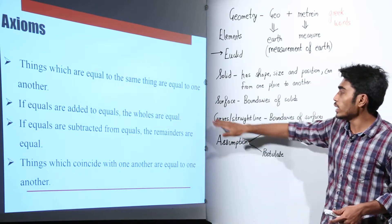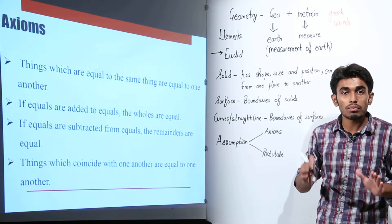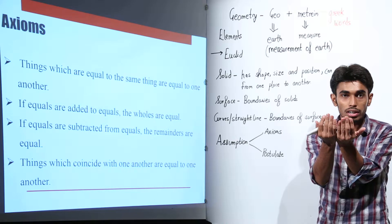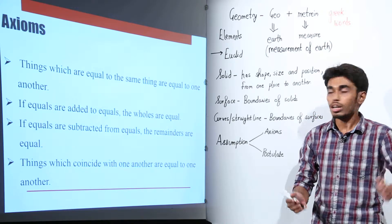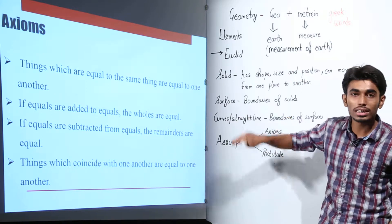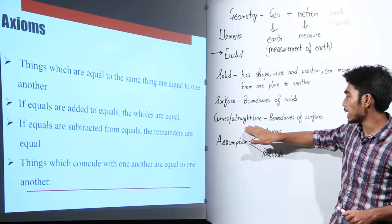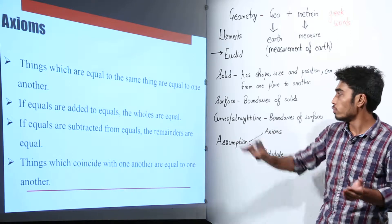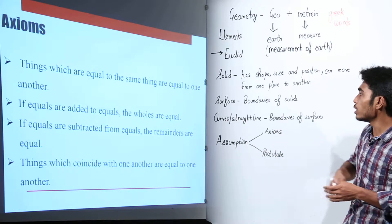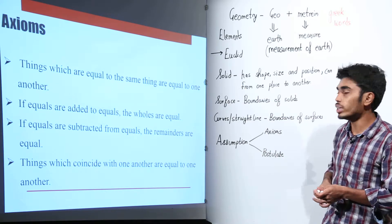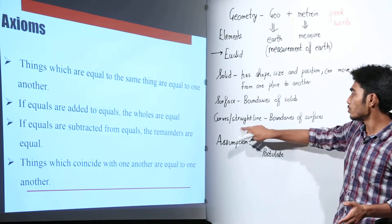Next, he defines surface. What is called a surface? Surface is the boundary of a solid — the boundary of a solid is called a surface. Now, the ends of curves and straight lines as boundaries of these surfaces are called curves or straight lines. For example, if I intersect a solid with a plane surface, I get a straight line.